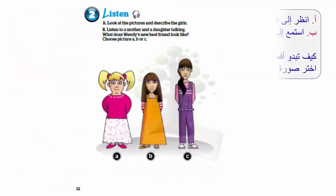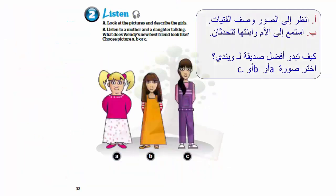Listen. A: Look at the pictures and describe the girls. B: Listen to a mother and a daughter talking. What does Wendy's new best friend look like? Choose picture A, B, or C.